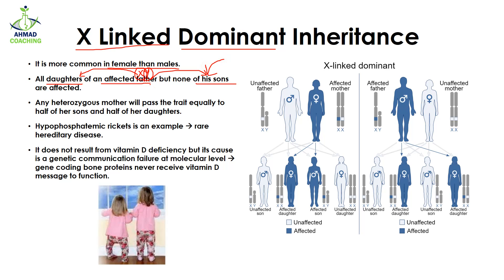Any heterozygous mother will pass the trait equally to half of her sons and half of her daughters. This is because the mother is heterozygous — capital X and small x — and there is a 50/50 probability that the affected X can go to a son as well as to a daughter.